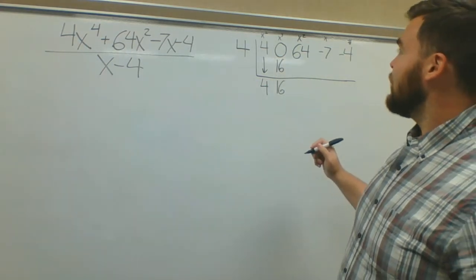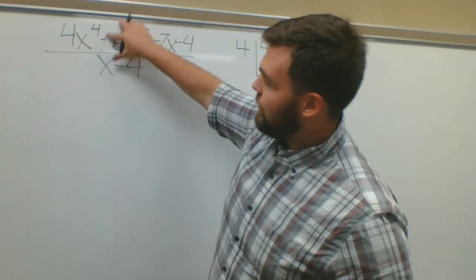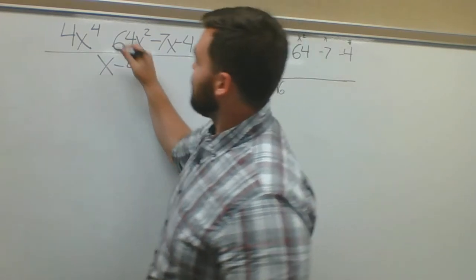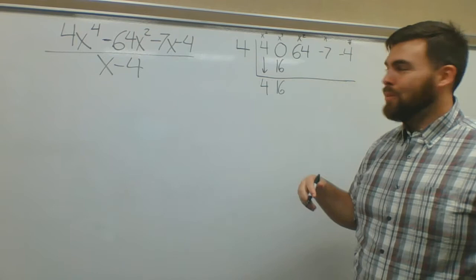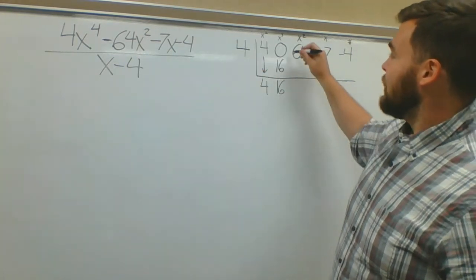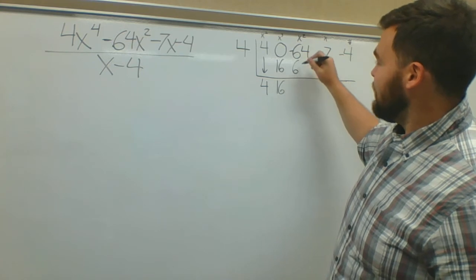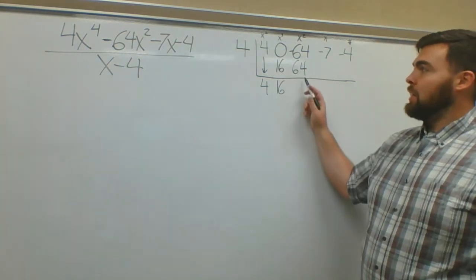This was supposed to be negative 64. I'll just change this real quick, because I was trying to make a point here. Negative 64. Sorry, you can change anything. Hopefully you're not writing it yet. 16 times 4 is going to be positive 64.